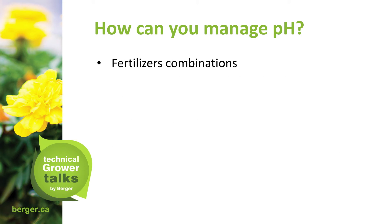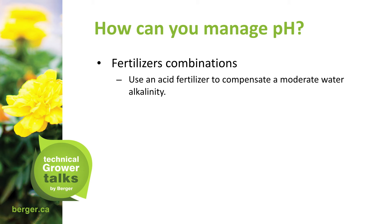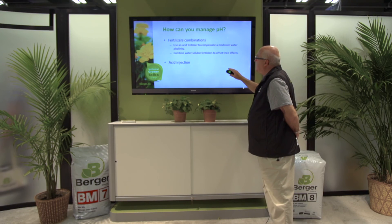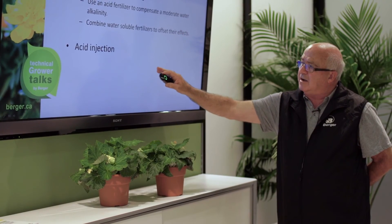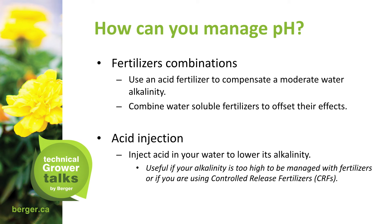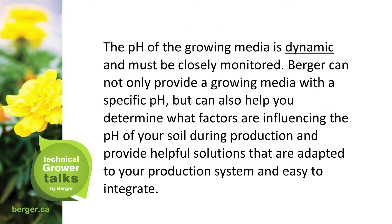How can you manage pH? Fertilizer combinations: use either an acid fertilizer to compensate for moderate water alkalinity, or combine water-soluble fertilizers to offset their effects. For moderate water alkalinities — around 150 to 180 — fertilizer management may be sufficient. But in cases of higher alkalinity — 280 up to 300-plus — acid injection is needed. Inject acid in your water to lower its alkalinity, which is useful if your alkalinity is too high to be managed with fertilizers or if you are using a controlled-release fertilizer. The pH of growing media is dynamic and must be closely monitored. Berger can not only provide a growing media with a specific pH, but can also help you determine what factors are influencing the pH of your substrate during production, and provide helpful solutions that are adaptive to your production system and easy to integrate.